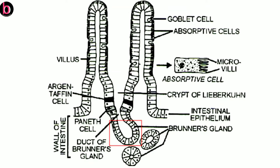The last cell type is enzyme-secreting cells present in the crypts of Lieberkühn. A number of enzymes are secreted by these cells. For example, maltase, isomaltase, sucrase, and lactase — all are for digestion of carbohydrates.